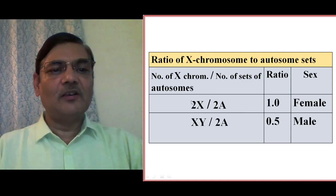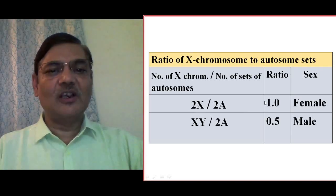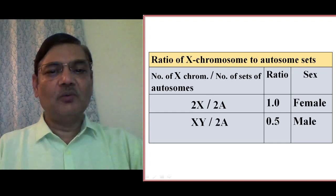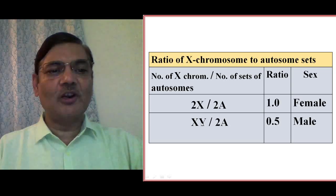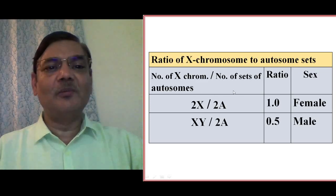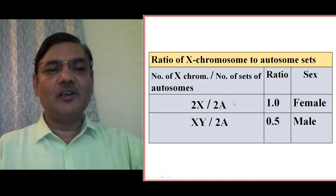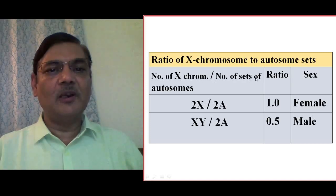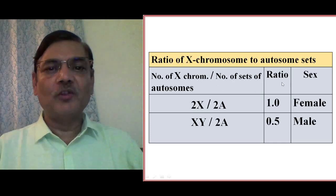There are many other molecular aspects of sex determination, but this ratio is of prime importance. If the value is 1, the individual is female. If there is only one X chromosome and two sets of autosomes, the ratio is 1/2 = 0.5, and that individual will be male — even if a Y chromosome is absent, the individual will show male phenotype. So although the XX/XY system exists in Drosophila, it differs from the mammalian system; here the number of X chromosomes divided by the number of autosome sets determines sex.